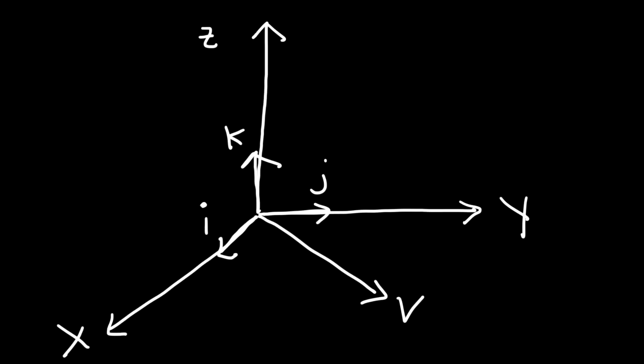The first direction angle we need to be familiar with is alpha, which is between the unit vector i and the vector v. The next one is beta, which is between the unit vector j and vector v. And then the last one is gamma, which is between the unit vector k and the vector v. So those are the three direction angles: alpha, beta, and gamma.